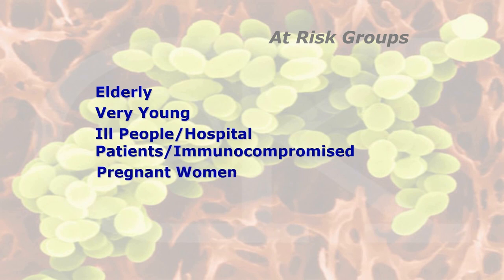People whose immune system is compromised — through a disease such as AIDS, drug therapies, or having just had an organ transplant requiring immunosuppressant drugs — could experience serious complications if they get food poisoning. And the last at-risk group is pregnant women — not so much the pregnant women themselves but the unborn child, as bacteria such as Listeria, E. coli, and Salmonella can seriously affect the unborn child.